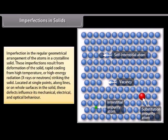Imperfections in solids refer to irregularities in the regular geometrical arrangement of atoms in a crystalline solid. These imperfections result from deformation of the solid, rapid cooling from high temperature, or high-energy radiation such as X-rays or neutrons striking the solid. They can be located at single points, long lines, or on the whole surface of the solid, and influence its mechanical, electrical, and optical behaviour.